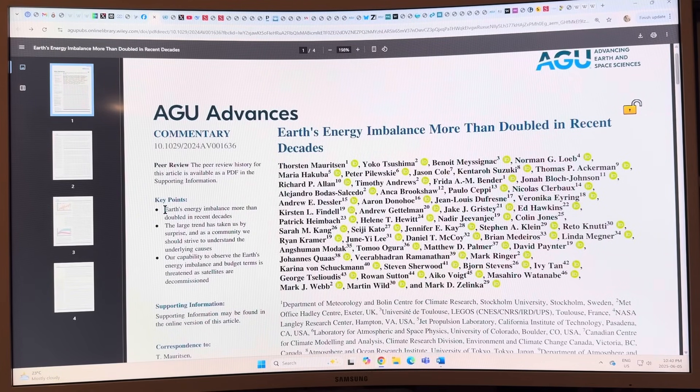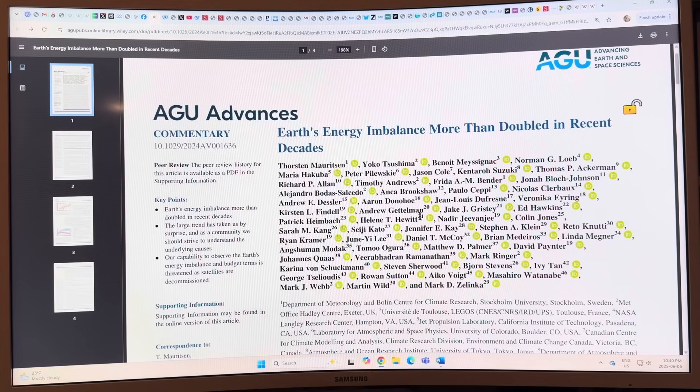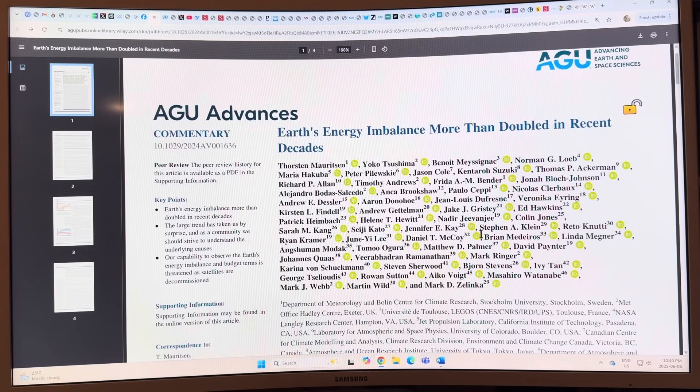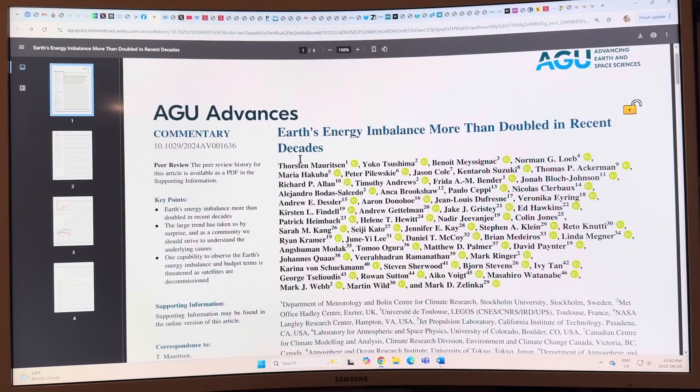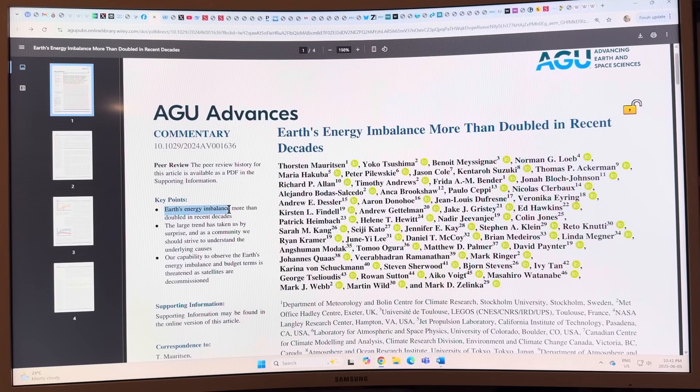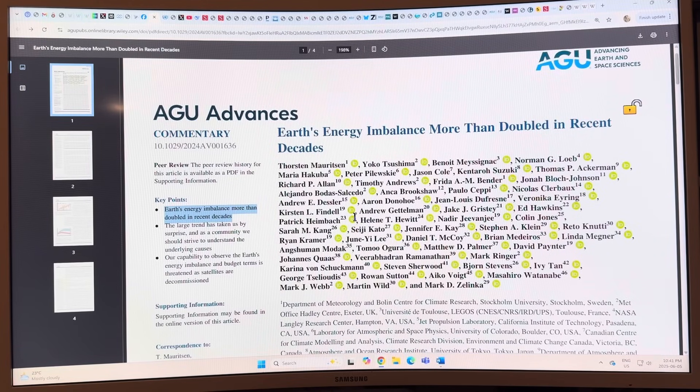Is that how easy it is to get your name on a scientific publication today? I'm being a bit harsh, but I'm kind of annoyed because Hansen's a leader. He's done all of this work and he doesn't really get the credit for it. Young climate scientists think, yeah, that guy doesn't know what he's talking about. He talked about that in some of his recent letters. Anyway, what does the paper say? The key point is that the EEI has more than doubled in recent decades. The large trend has taken us by surprise.